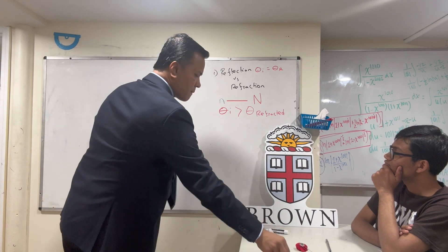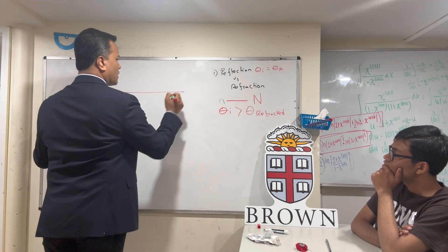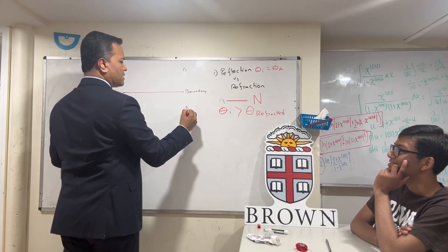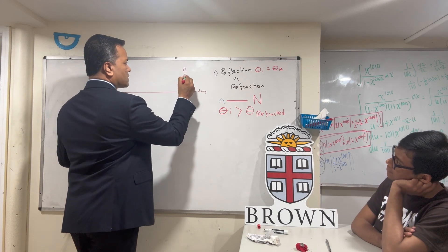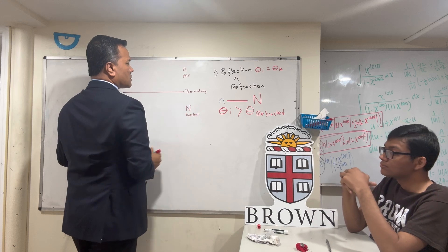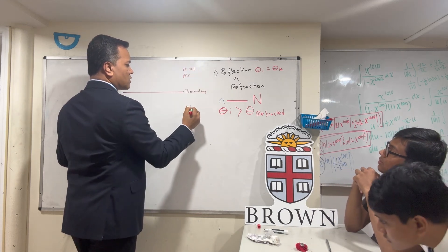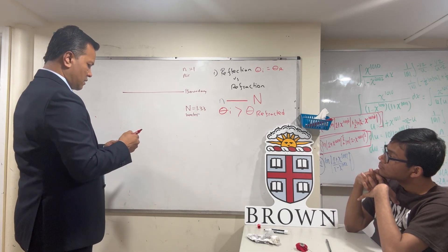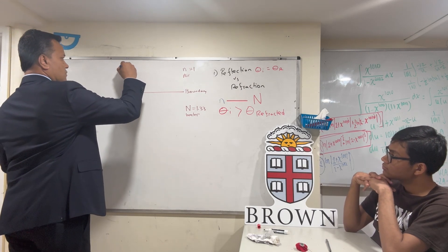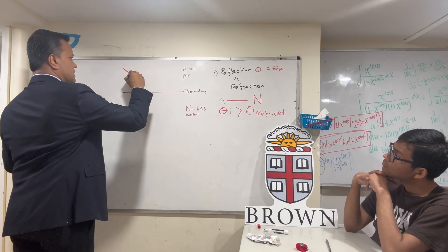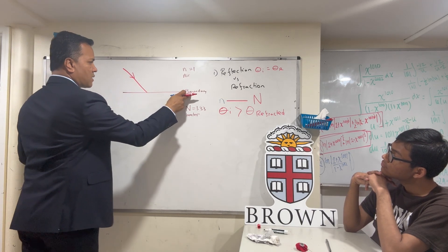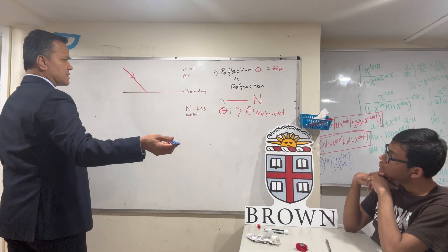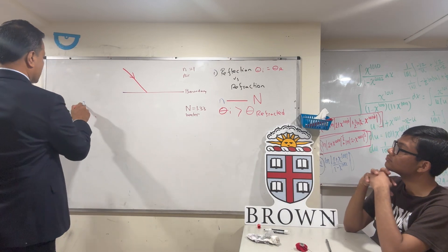I'm going to draw what we're going to call a boundary. We're going to call this small n and this big N — we'll call it water. We know that N air equals 1 and N water equals 1.33. I'm going to give you a red light — an incident ray — that strikes the boundary. Isaac, can you draw the normal and the incident angle?